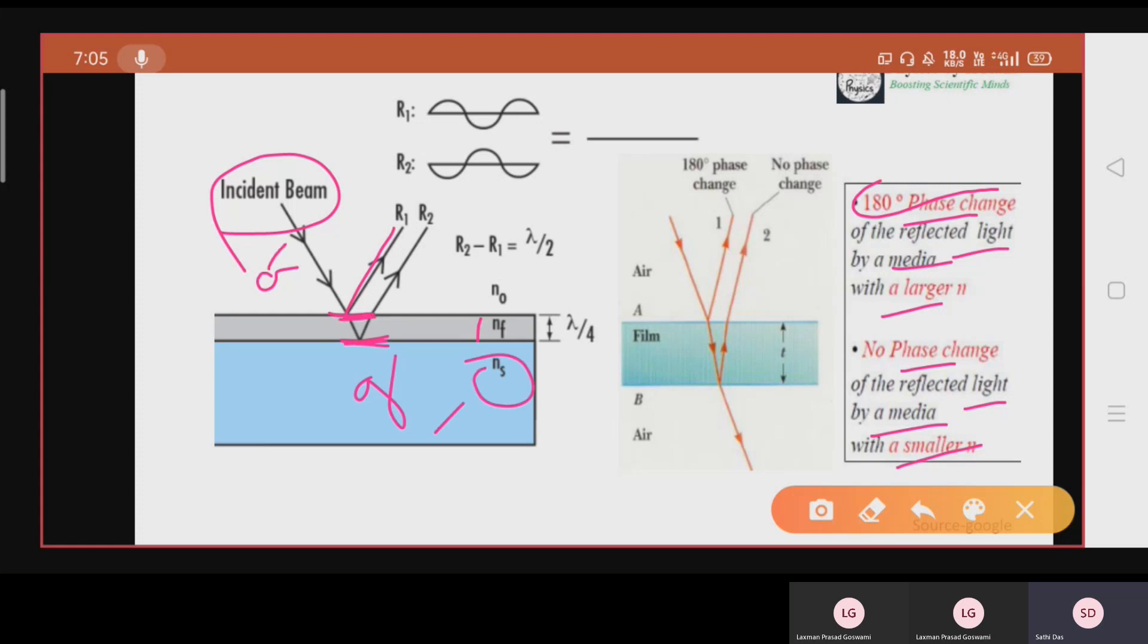At the air media thin film interface, there is a reflection and this reflection is happening from the denser side and it will give you a phase change of pi. From this side you can't get any phase change because this glass refractive index or this medium's refractive index is lower than this medium. So this interface is medium glass interface and there will be no reflection at the reflection from this side.